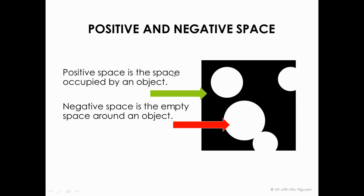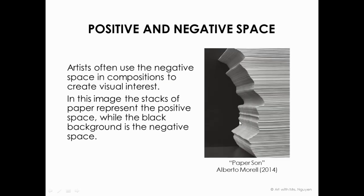Positive space is the space occupied by an object. The negative space is the space around that object. So in this image, the circles are the positive space and the black area is the negative space. Or it could actually be perceived in reverse — maybe this is a piece of Swiss cheese and the white areas are where the cheese is missing. You can look at it both ways.